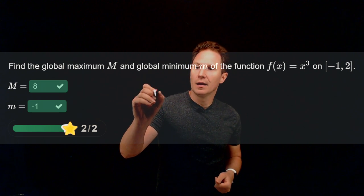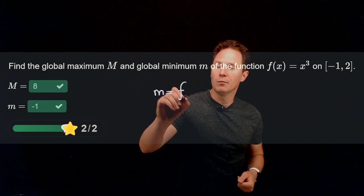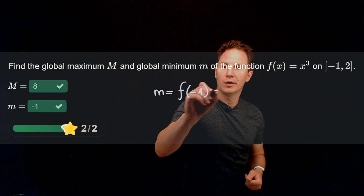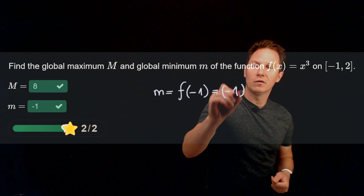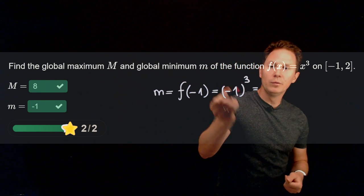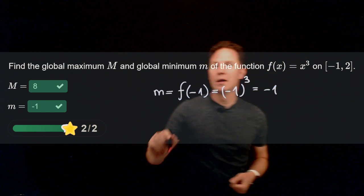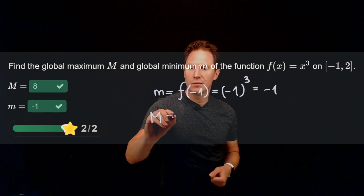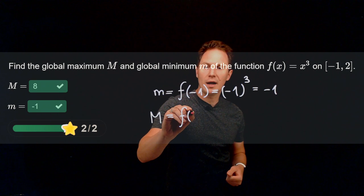So it must attain its global minimum at the left end point of this interval which is negative 1 cubed would be the value that is negative 1, whereas the largest value it will attain is at the right end point of this interval.